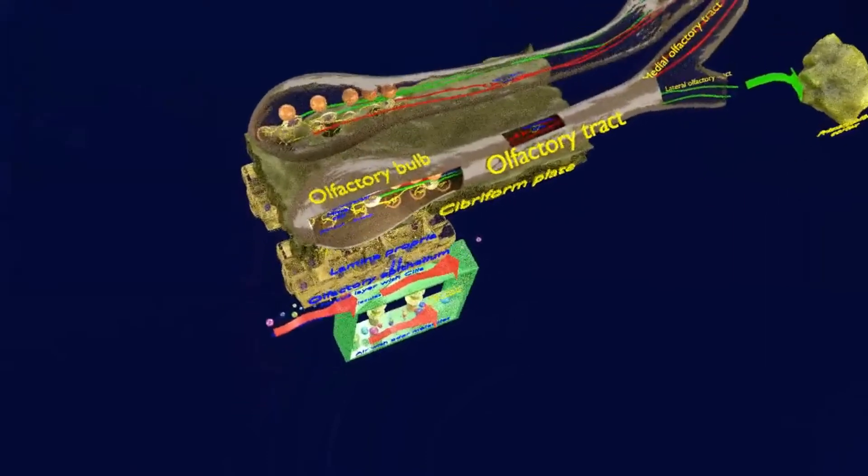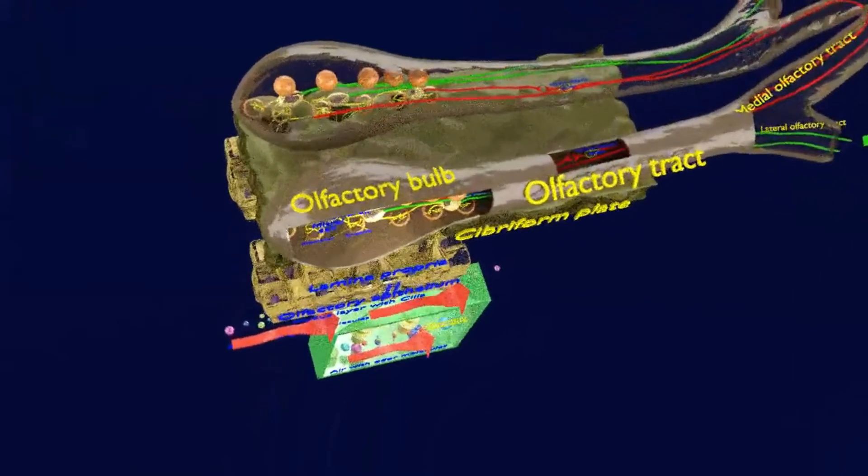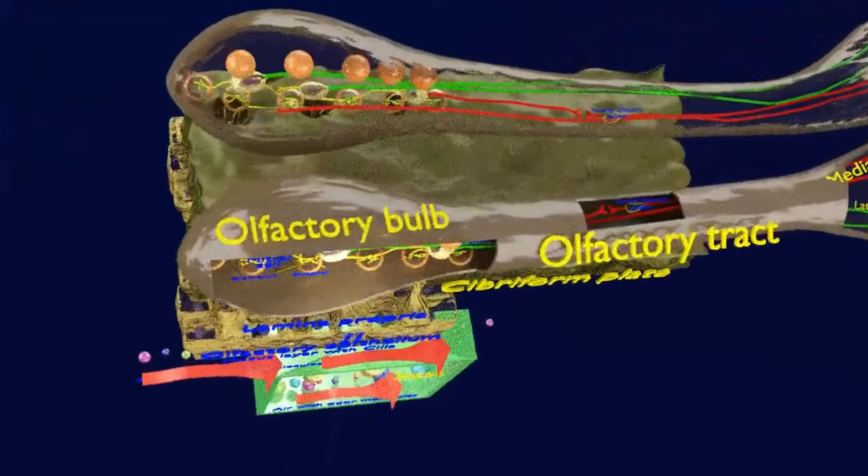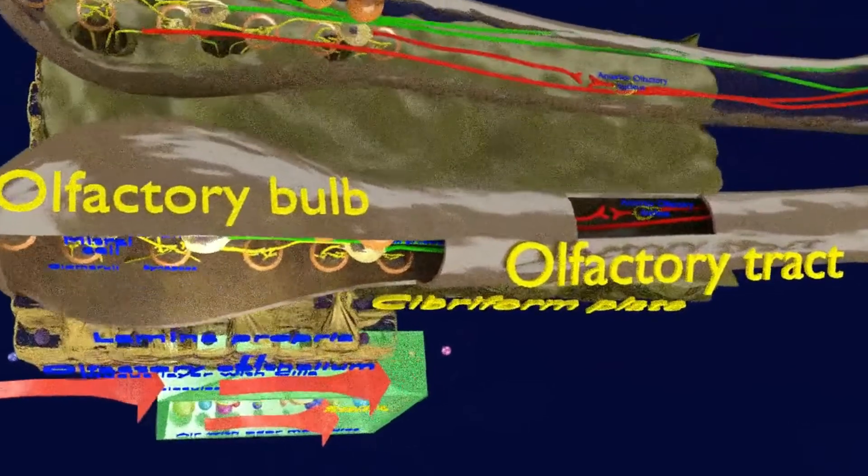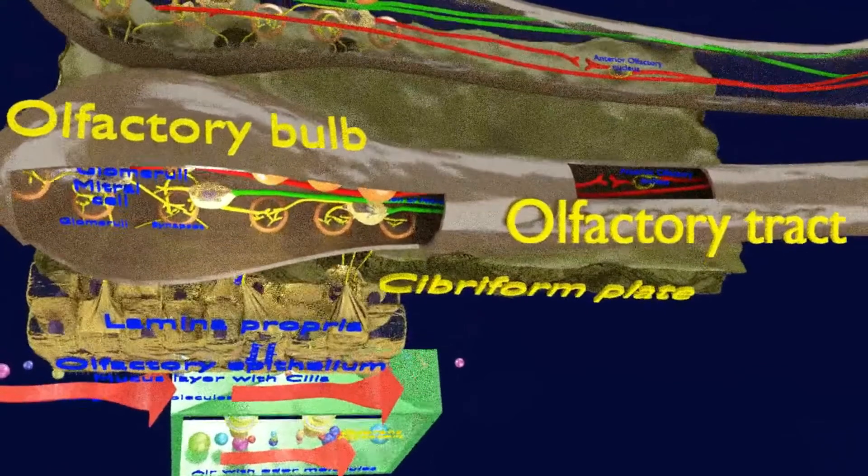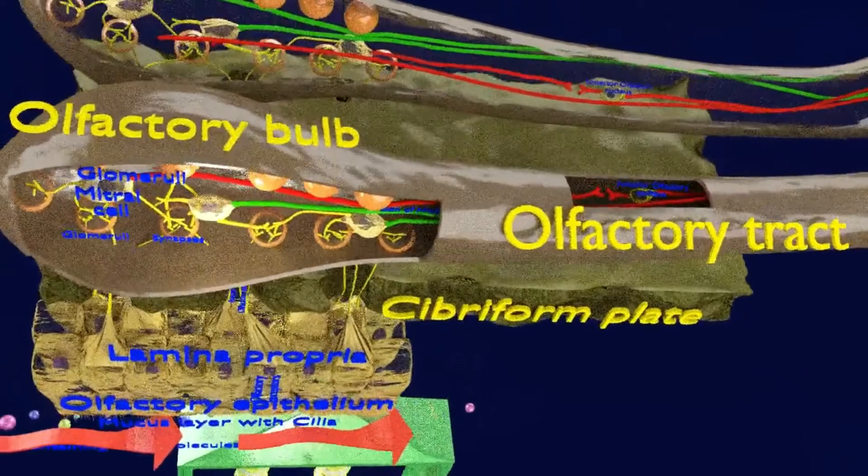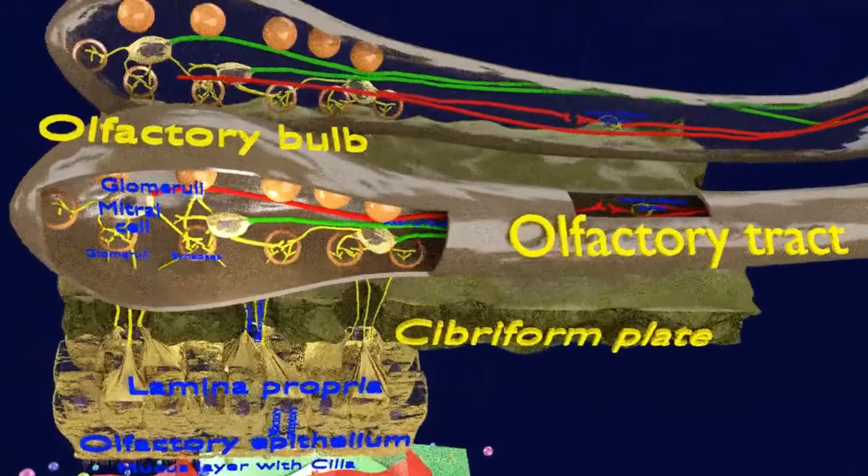Now let me discuss some basic anatomy of the olfactory system. Firstly, there is the olfactory bulb as you see now which is the extension of the brain tissue. The posterior extension of the olfactory bulb is the olfactory tract.